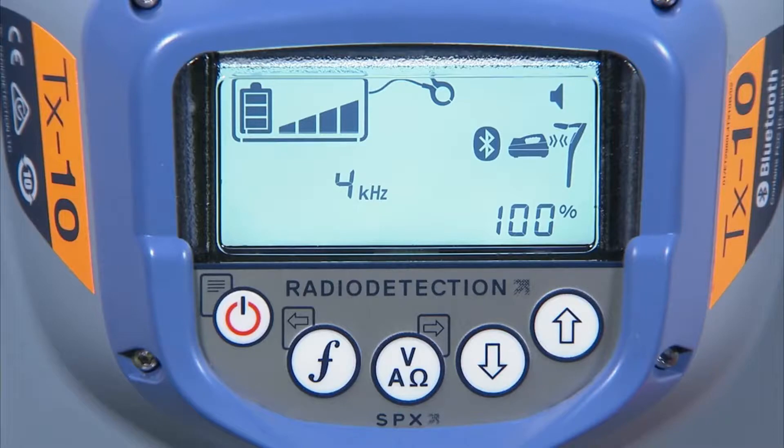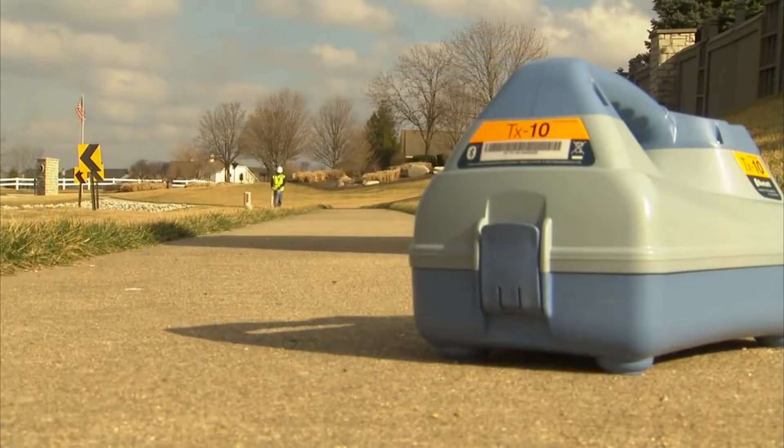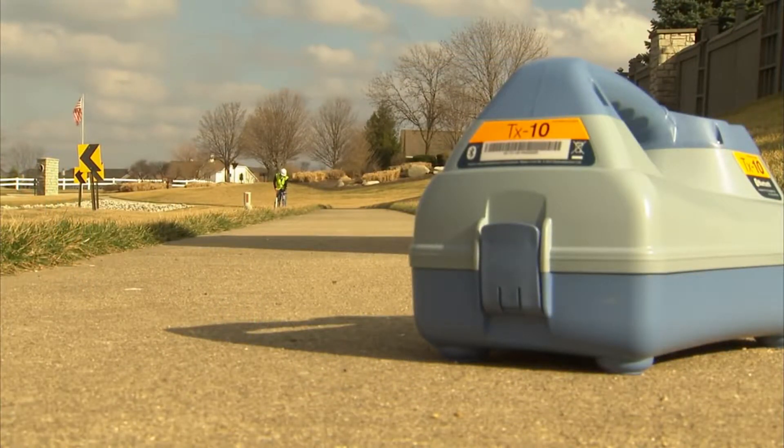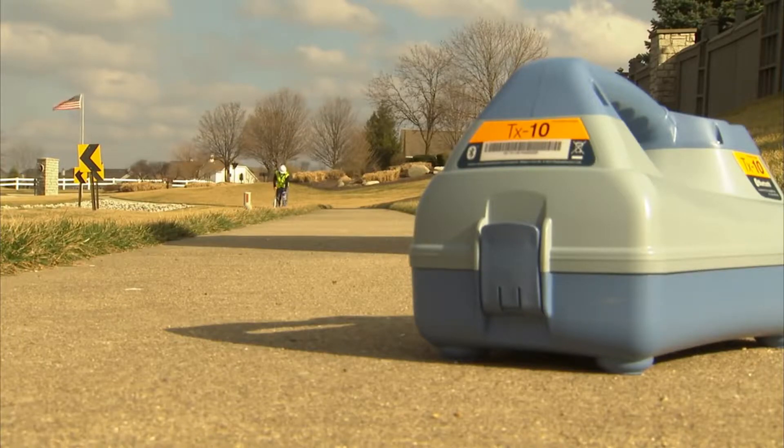These can be changed by using the up-down arrow keys on the transmitter. There are many factors that determine how much power output you should use, such as the depth of the utility you are trying to apply the signal to, how far you wish to trace the signal, and the type of utility you are trying to apply the signal to.